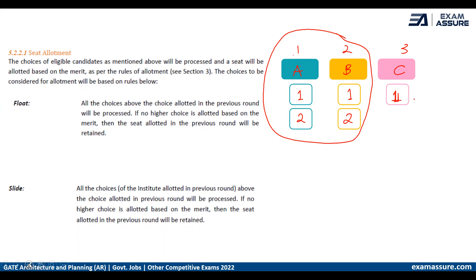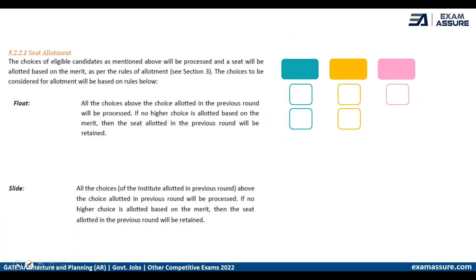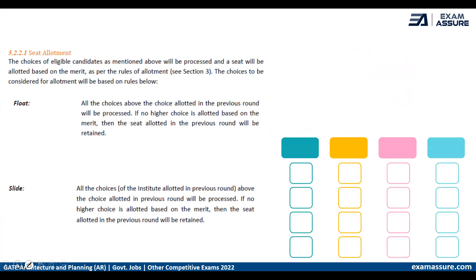In case of the slide option: taking the same example of four institutes A, B, C, and D with the same preferences — first, second, third, and fourth — for different branches. From institute A, branch X is your first choice, branch Y is your second choice, and so on for the remaining institutes.